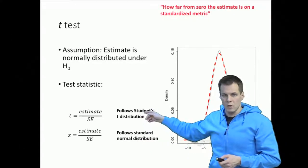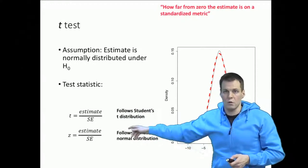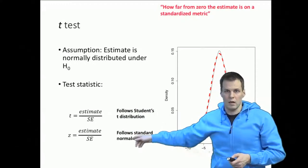So in large samples the students t-distribution approaches the standard normal distribution with mean of zero and standard deviation of one.